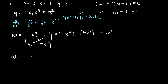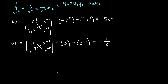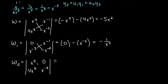For W1, we replace the first column with 0 and x to the negative 3, keeping the second column as x to the negative 1 and negative x to the negative 2. The determinant gives 0 minus x to the negative 4, so W1 equals negative x to the negative 4. For W2, we replace the second column with 0 and x to the negative 3, keeping the first column as x to the 4 and 4x cubed. The determinant gives x to the 4 times x to the negative 3 minus 0, so W2 equals x.